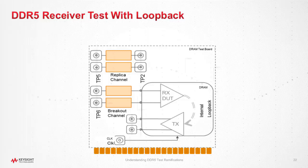After the calibration process, the pattern generator is connected to the TP6 SMA connectors in this example on the slide, and the analyzer part is connected to the appropriate loopback, and the test process can start. Note that this schematic is actually generic and does not reflect the fact that in DDR5 the clock is differential while the data signal is single-ended.